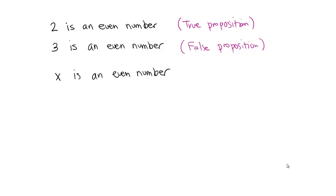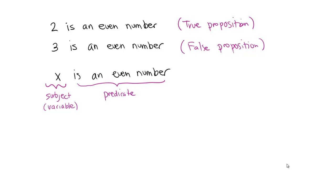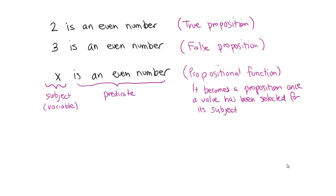Is it possible to turn an ambiguous statement like 'x is an even number' into a proposition? To do that we need to focus on grammar. The first part of such a sentence is the subject or variable. The second part — what property about the subject is being declared — is called the predicate. A sentence where the subject is a variable and a predicate is attached is called a propositional function. It becomes a proposition once a value has been selected for its subject.